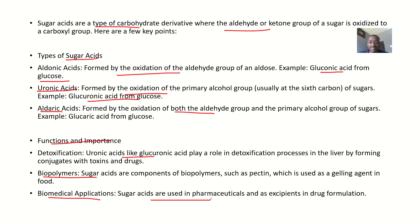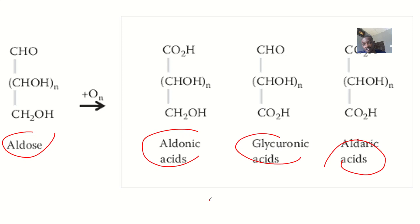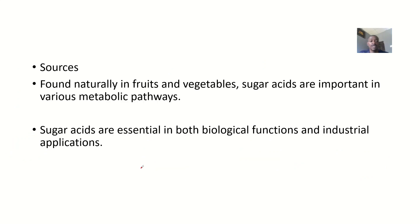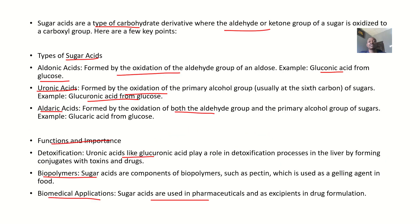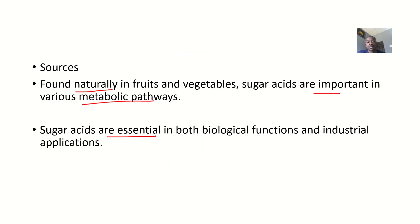Sugar acids are also used in pharmaceuticals as excipients in drug formulation. As for sources, some are found naturally in fruits and vegetables. Sugar acids are important in various metabolic pathways and are essential in both biological functions and industrial applications. That covers the short notes on sugar acids — types, functions, importance, and sources.